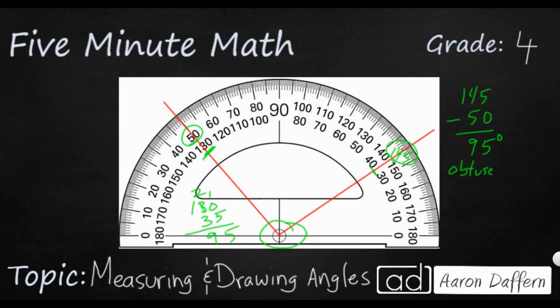The only reason we have inside numbers and outside numbers—you notice that we have a zero on the inside over on the right and a zero on the outside over on the left. So it just depends on if your angle opens the left or opens the right. You can use either one. Whenever you have two rays or two line segments where neither of them are touching zero, you're going to have to take the two numbers and subtract them.